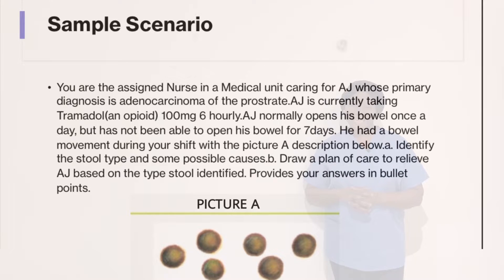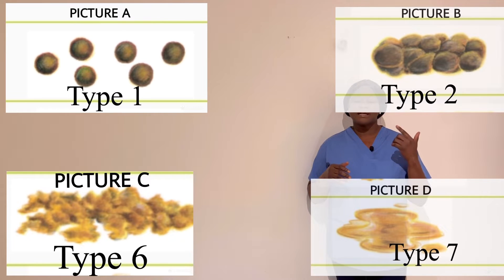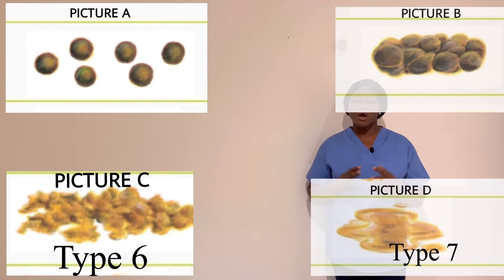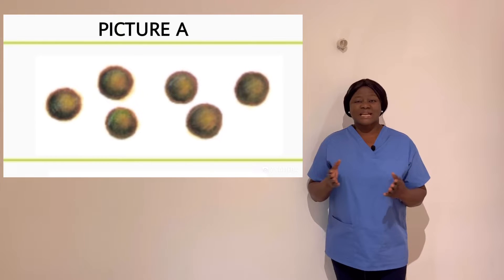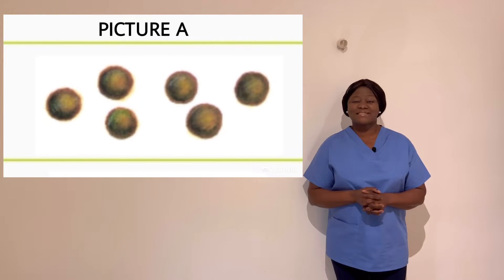Now let's get started. Based on the picture, as regards the marking criteria, the focus is on types 1 and 2, and 6 and 7, which can be categorized as A, B, C, and D. Based on the picture and the scenario, this can be identified as type 1 stool.